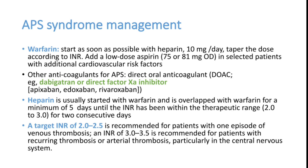Antiphospholipid syndrome should be treated with anticoagulation. For non-pregnant patients, warfarin or dabigatran (oral anticoagulants) can be used with a target INR of 2 to 2.5. For pregnant patients, heparin or low molecular weight heparin must be used. The approach is to start heparin, then begin warfarin concurrently, stop heparin after one week, and continue warfarin or dabigatran. In pregnant ladies, continue only heparin.